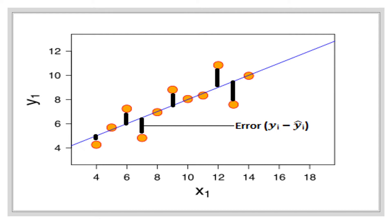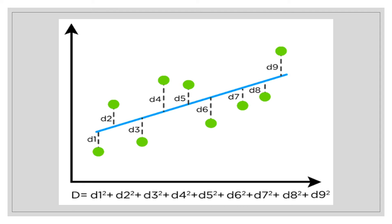Why do we need to calculate this error? This error is calculated to find the distance to the line. Distance to the line is the summation of all of the squares of these errors. As you can see in this slide, distance to the line, represented as capital D, is equal to the sum of all of these errors. In least square method, we choose the model which has the minimum value of distance to the line, which means that it has minimum error.